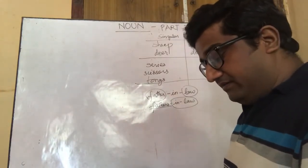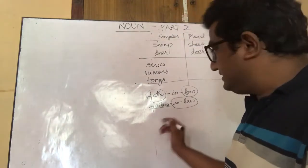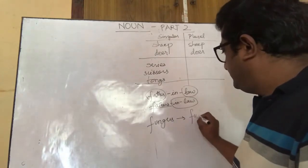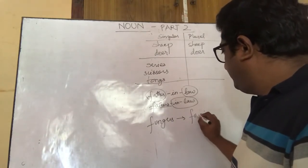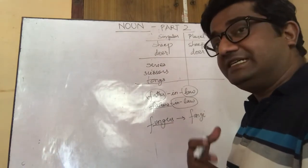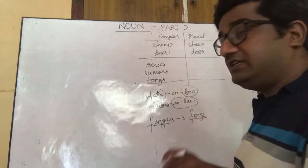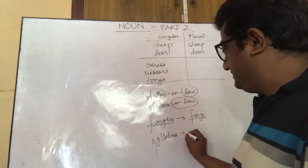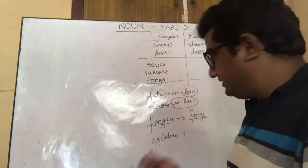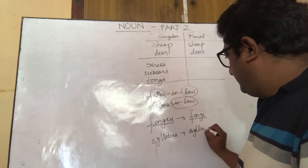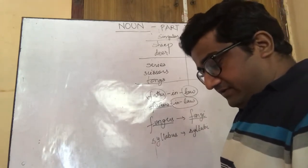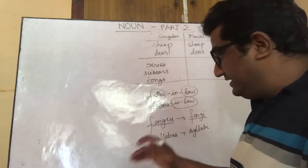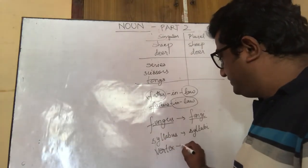There are words borrowed from Latin. For example, fungus: in singular it is pronounced 'fungus' and its plural is pronounced 'fungi'. Similarly, syllabus — as in the syllabus of your subjects — its plural form is syllabi. Another example is vortex or vertex, which becomes vertices.